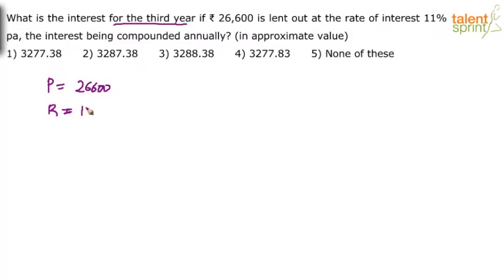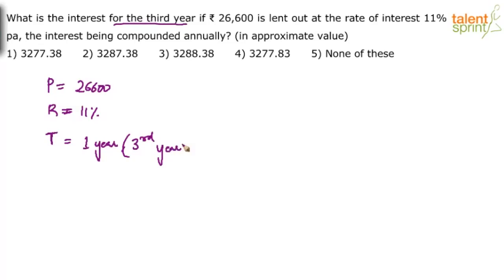The time period here is one year — not three years. Many have taken three years and gotten the wrong answer. The time period is one year, and this one year is actually the third year. He is not asking us to find the interest for three years; he's asking for the interest for the third year — meaning how much interest we get only in the third year.